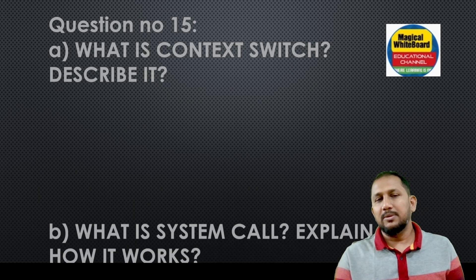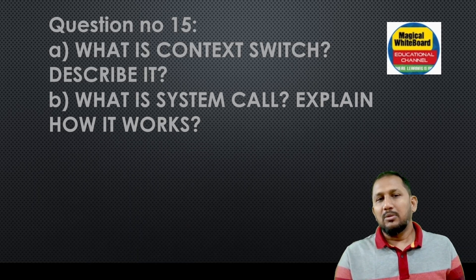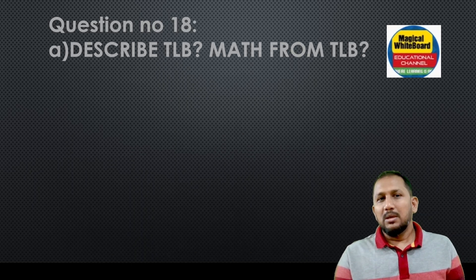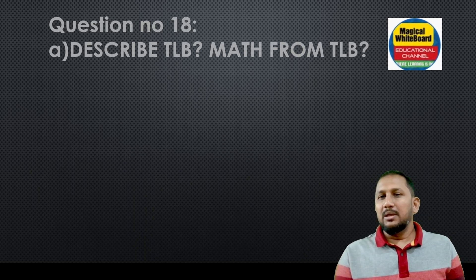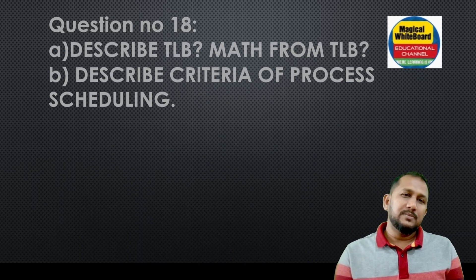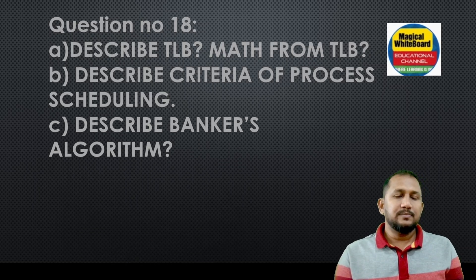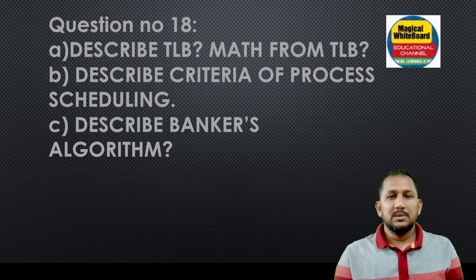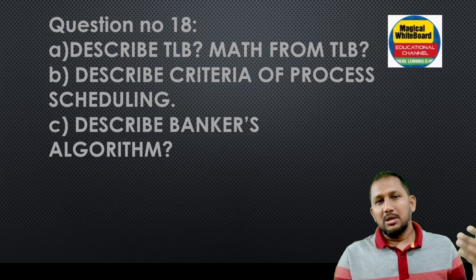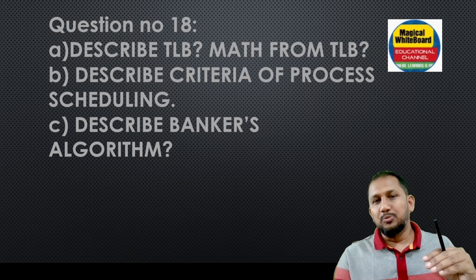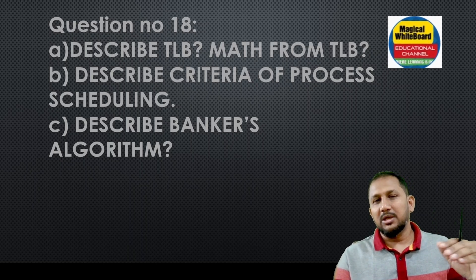Question number fifteen: what is context switch? Describe it. What is a system call? Explain how it works. Describe TLB (Translation Lookaside Buffer) and solve one math problem from TLB. Describe the criteria of process scheduling: CPU utilization, throughput, response time, turnaround time, and waiting time.